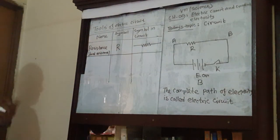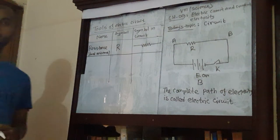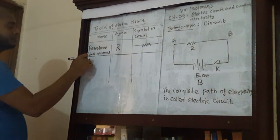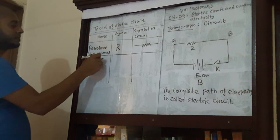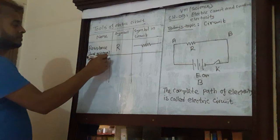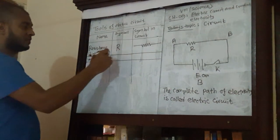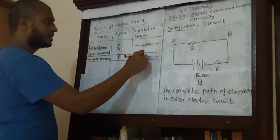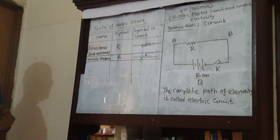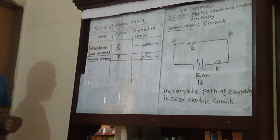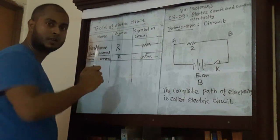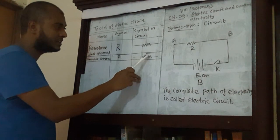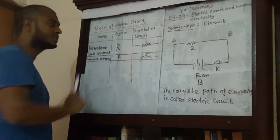In the next step, I am going to draw variable resistance. The fan regulator and similar devices are called variable resistance. Variable resistance is also denoted by capital R. The symbol of variable resistance has a jockey — just like a pen point — that you can touch at different points along the resistance. That is why this resistance is called variable resistance.